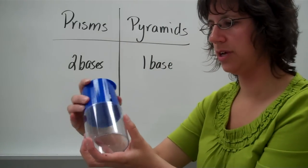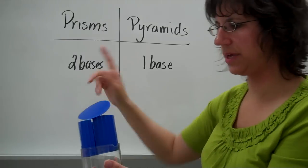So that's a cylinder. It is an example of a prism because it has two bases.